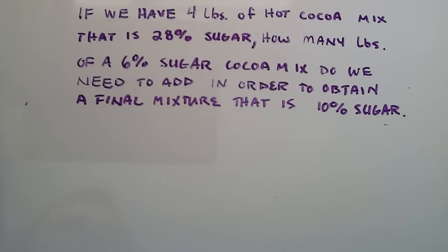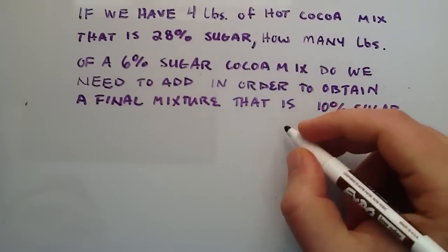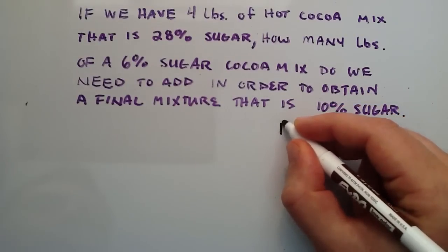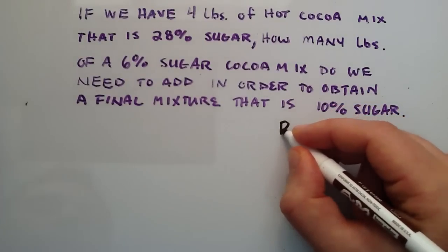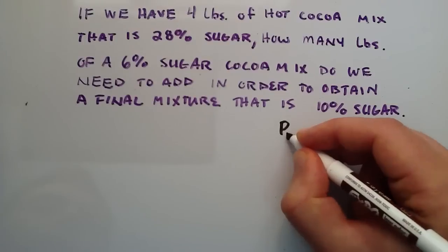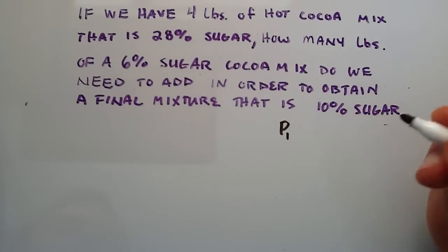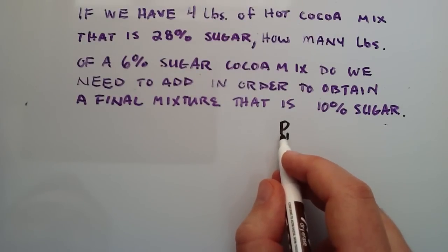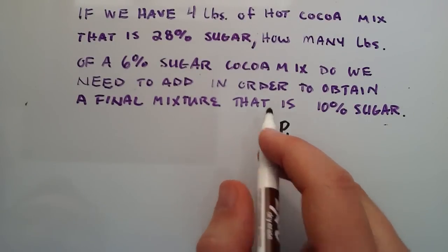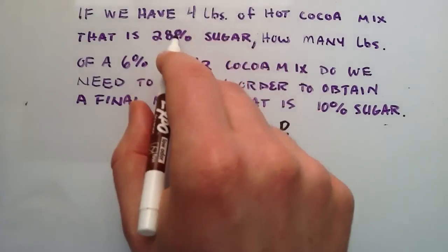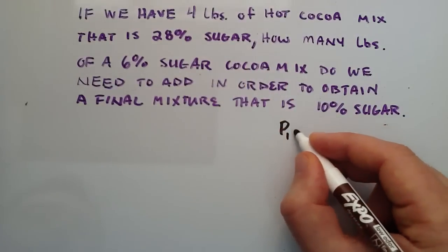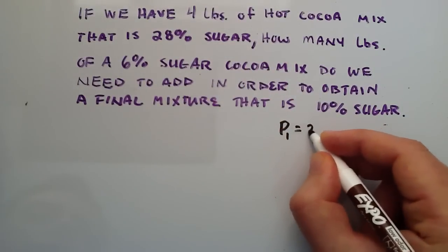We're going to set this up like we did in the last tutorial. We're going to figure out the variables that we know and the ones we don't know, and define them as much as we can. We're going to say that P1 is the percentage of sugar in mixture 1. So the first mixture mentioned here is mixture 1, and the percentage of sugar in mixture 1 is 28%.